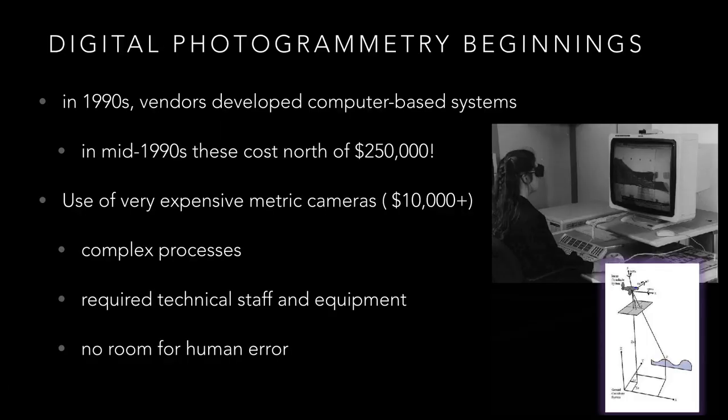Moving forward to the 1990s, computer vision afforded new capabilities for computer-based systems, but the systems were extraordinarily expensive. Generally, metric cameras — cameras specifically calibrated for the purposes of aerial imaging — were deployed. But again, this required a very complex process, expensive equipment, and highly trained personnel, with basically no room for error. You either got it right, or it just didn't work.